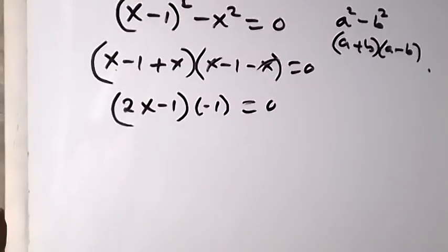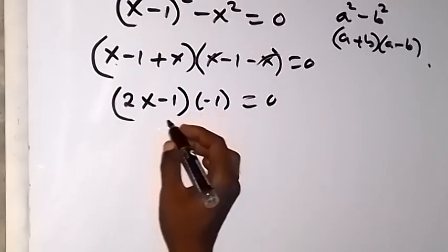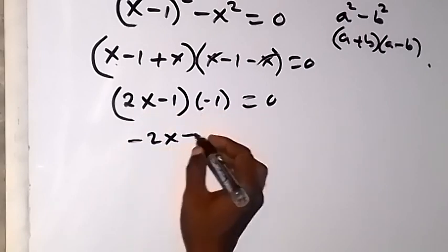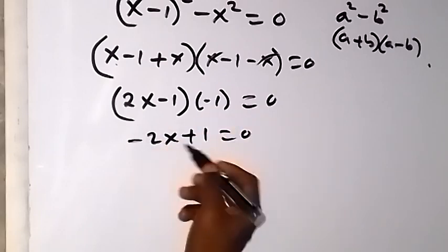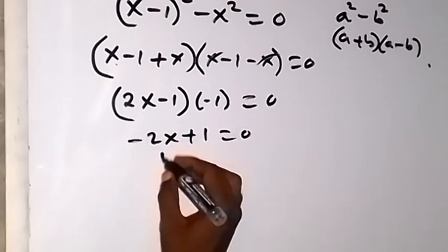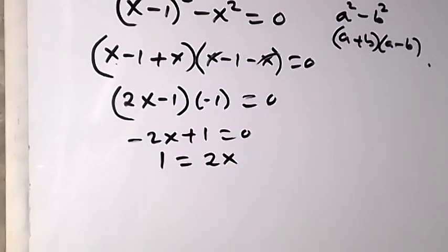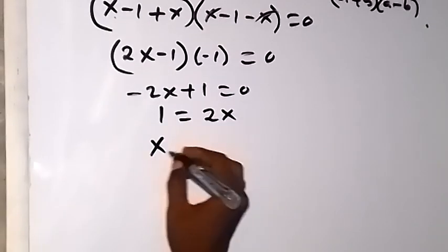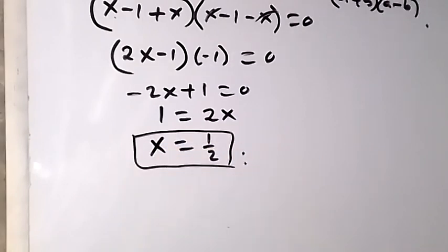From here, we can simplify. We can use minus to multiply and we have minus 2x plus 1 equals zero. Same way, when we solve this, we can take minus 2x to the other side and say 1 equals to 2x. When we divide both sides by 2, our x will also be 1 over 2, which is half. So this is the solution — the same thing as what we got the other time.